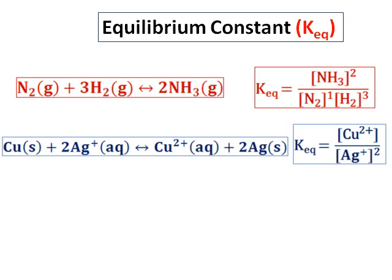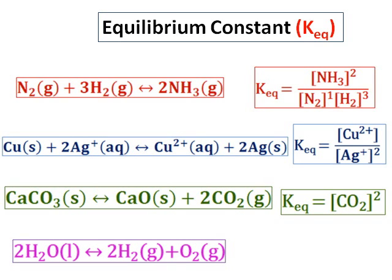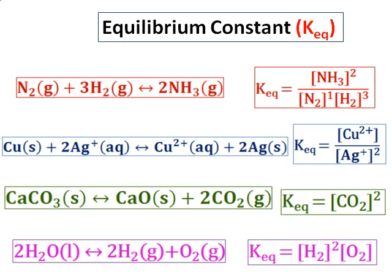Consider the third equation: calcium carbonate solid giving you calcium oxide solid plus 2 carbon dioxide gas. To write the equilibrium expression, calcium carbonate solid and calcium oxide solid will not be included, so the equilibrium equation contains only one product, carbon dioxide. K equilibrium equals [CO₂] raised to the power of 2. For the fourth example, 2 water liquid giving you 2 hydrogen gas and oxygen gas — the products hydrogen and oxygen are gases, whereas water is a liquid, so water will not appear, and K equilibrium equals [H₂]² times [O₂].